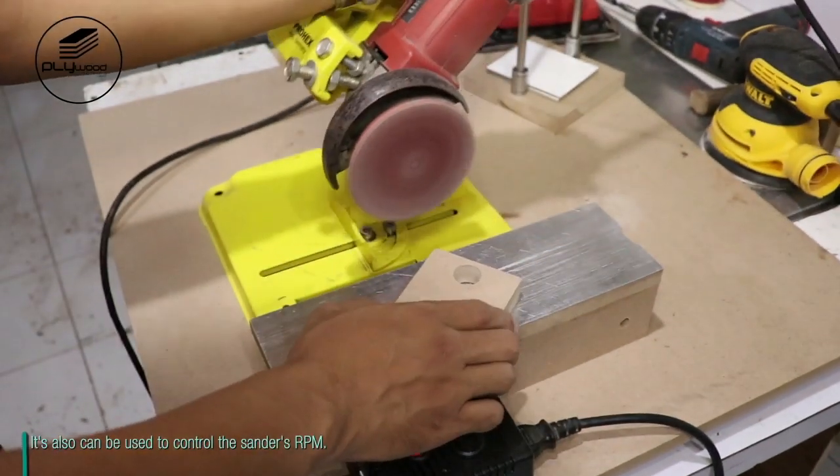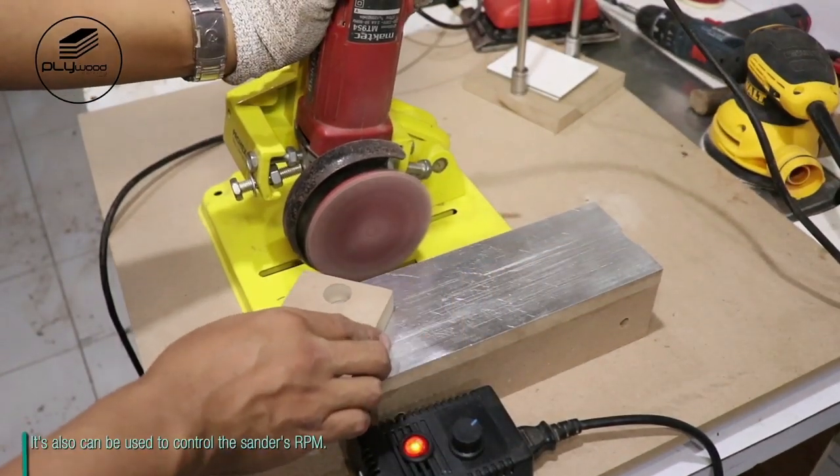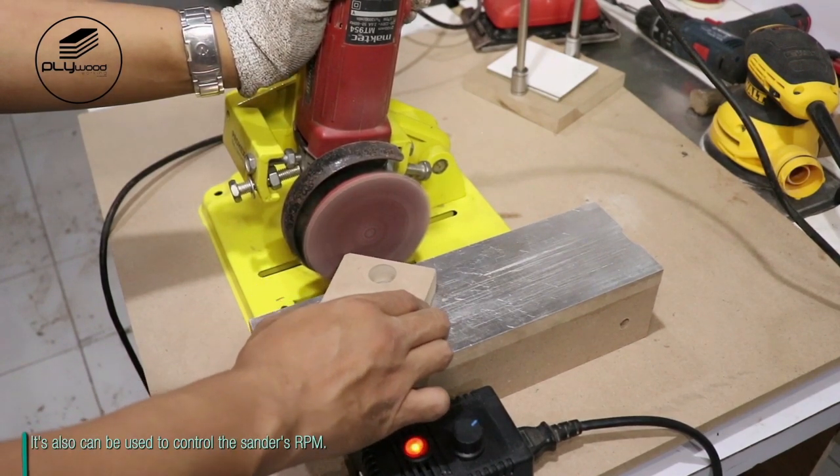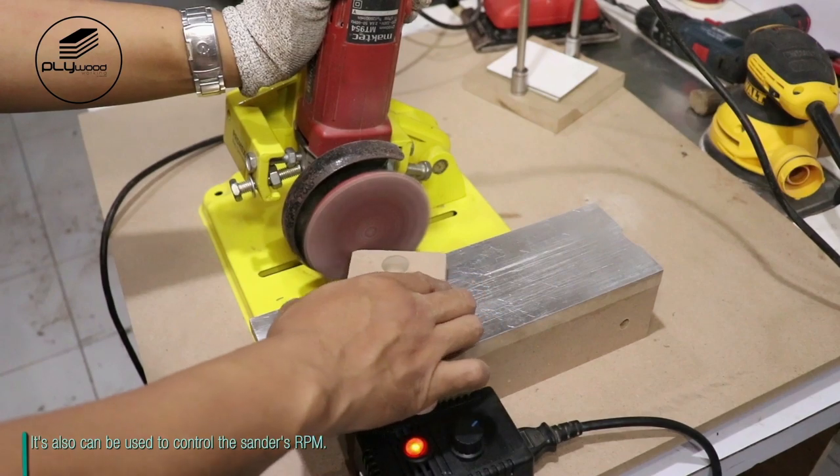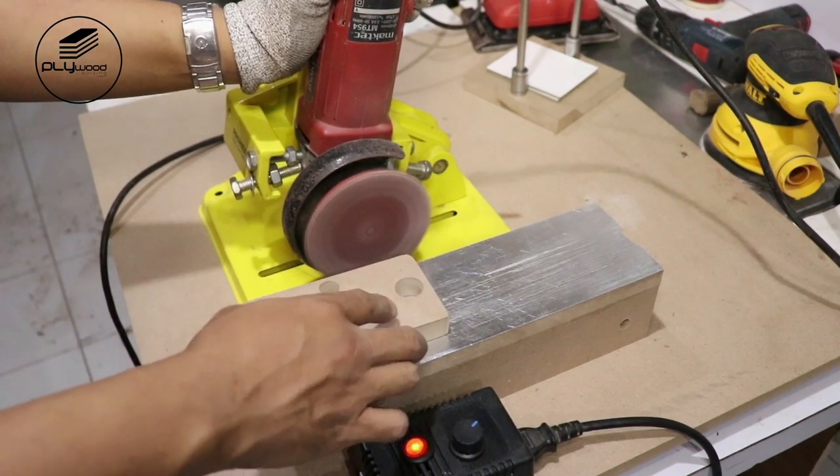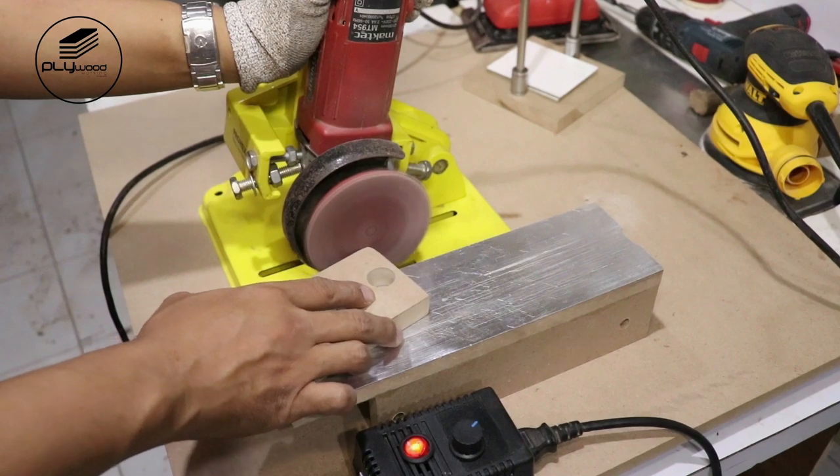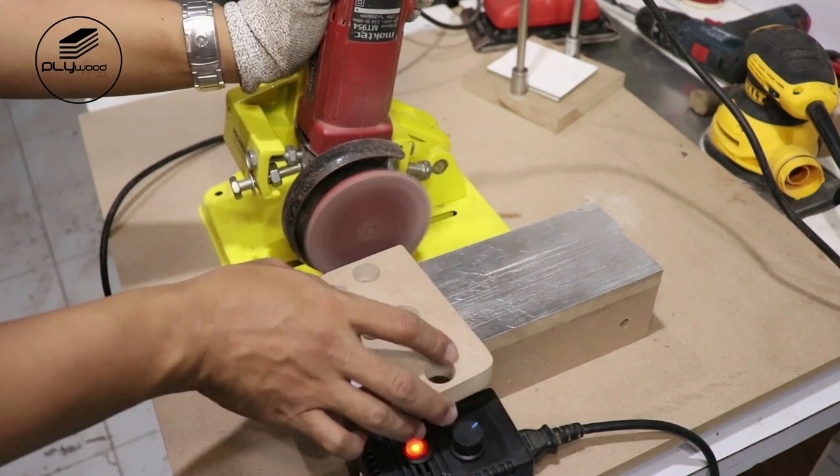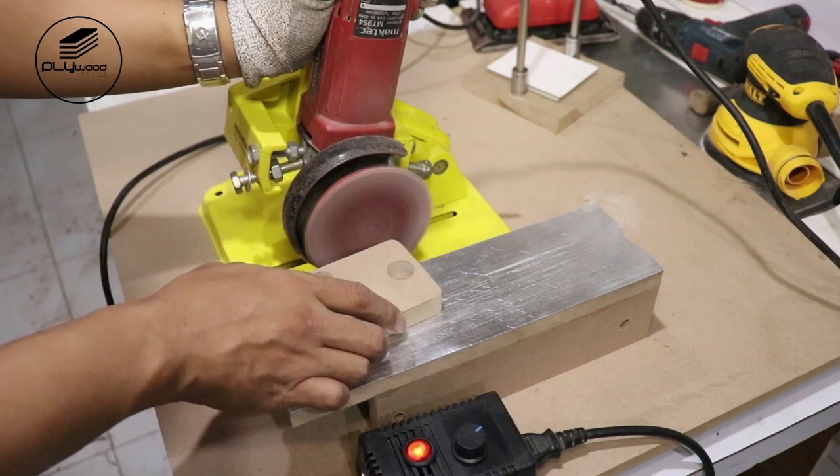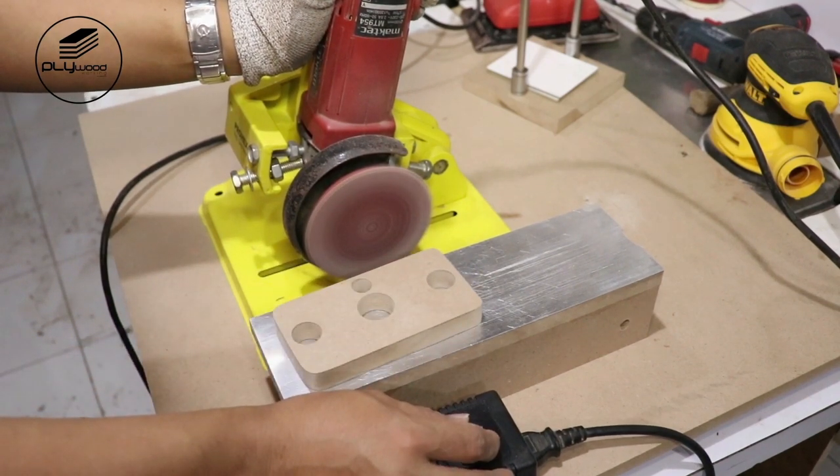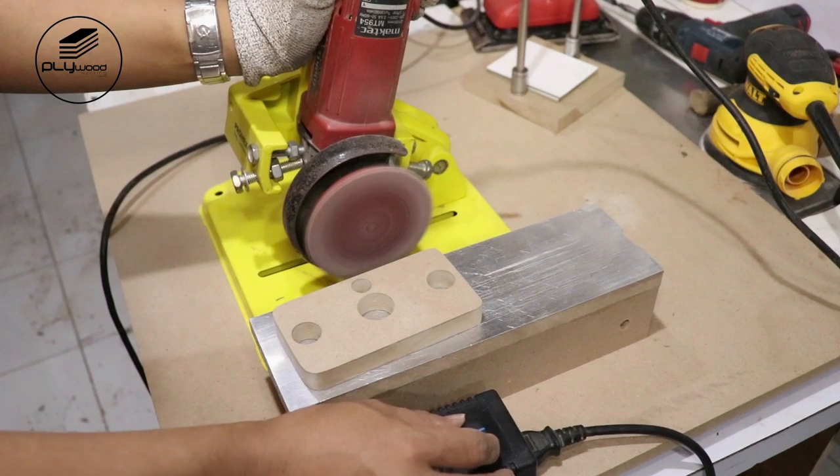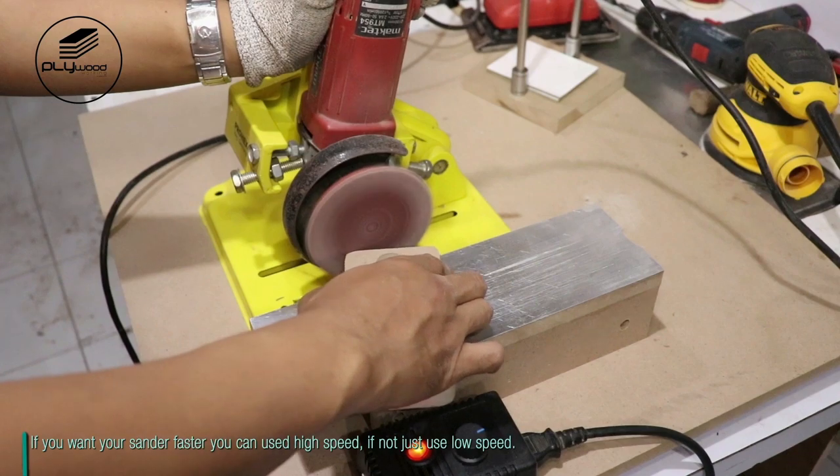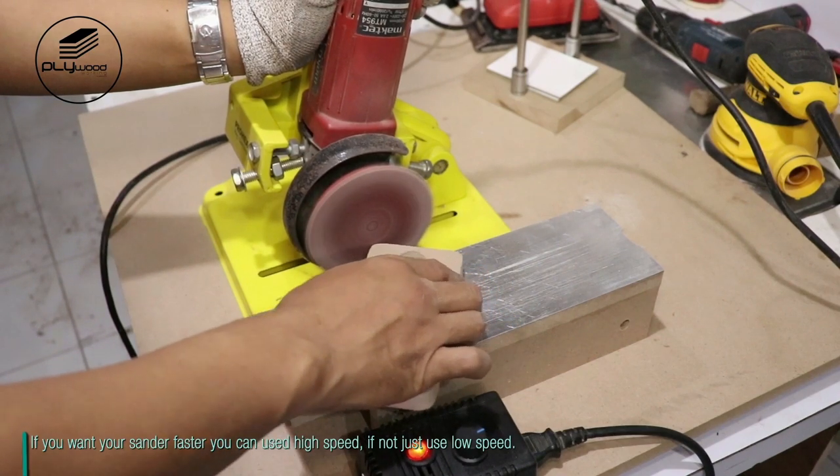It can also be used to control the sander's RPM. If you want your sander faster you can use high speed. If not, just use low speed.